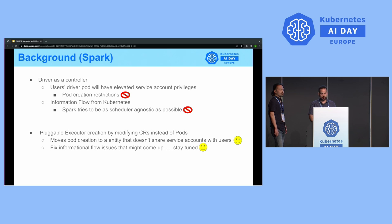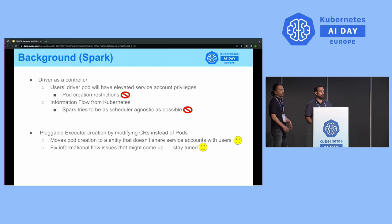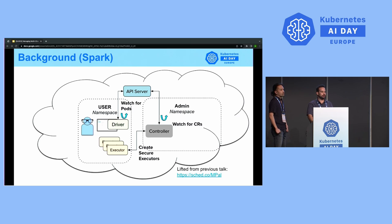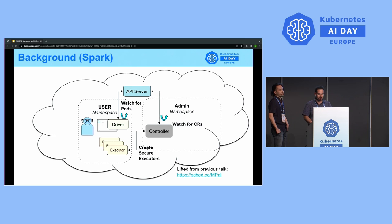To communicate with controllers, this is traditionally done via custom resources, so the Spark driver now modifies the custom resource instead of creating pods directly. This moves pod creation to an entity that doesn't share service accounts with users. Visually: the driver pod in the user's namespace communicates with the API server to create and modify a SparkApp custom resource. The admin controller watches for SparkApp custom resources, reads the desired executor pod templates from the spec field, and creates those executor pods via its reconciliation loop. The driver then waits for those executor pods asynchronously — functionally the same as before, so the rest of the Spark paradigm remains unchanged.